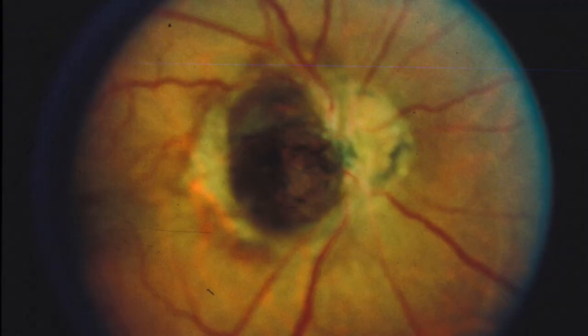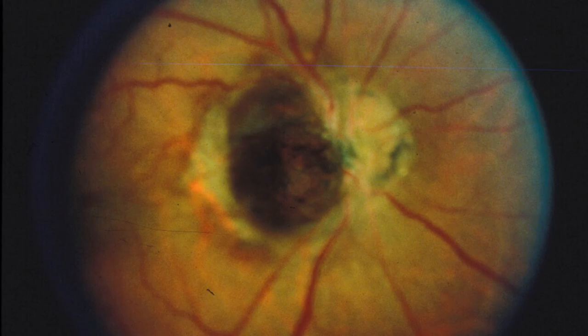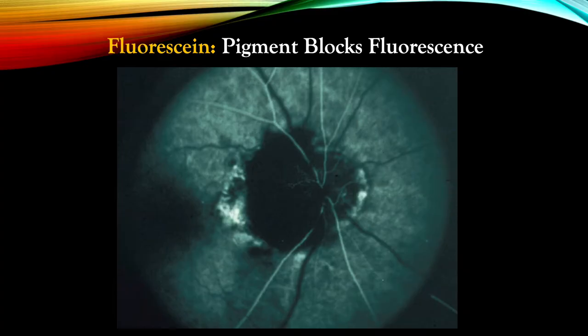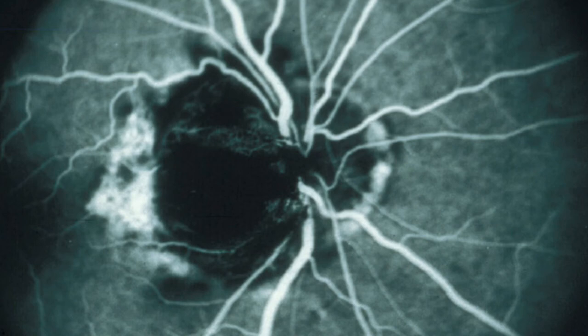Here is an example of an optic disc melanocytoma with brown coloration. It also has evidence of CNV along its nasal margin and hemorrhage below — these are rather atypical. In the early phase angiogram, the melanocytoma blocks fluorescence and is associated with choroidal neovascularization at its margin. The mid-phase angiogram shows some overlying intraretinal leakage with increased hyperfluorescence from retinal vessels. In contrast, the CNV is intensely hyperfluorescent at its margin.